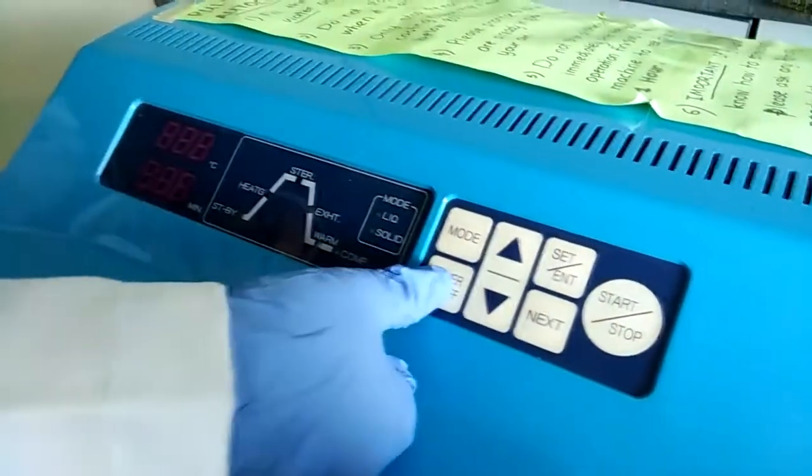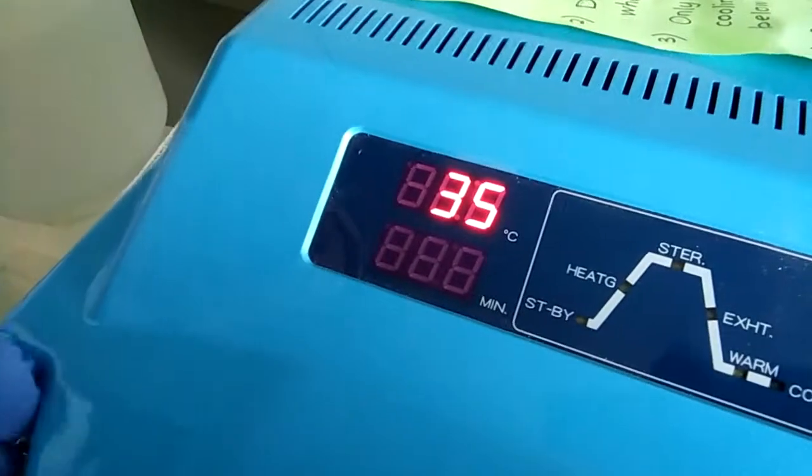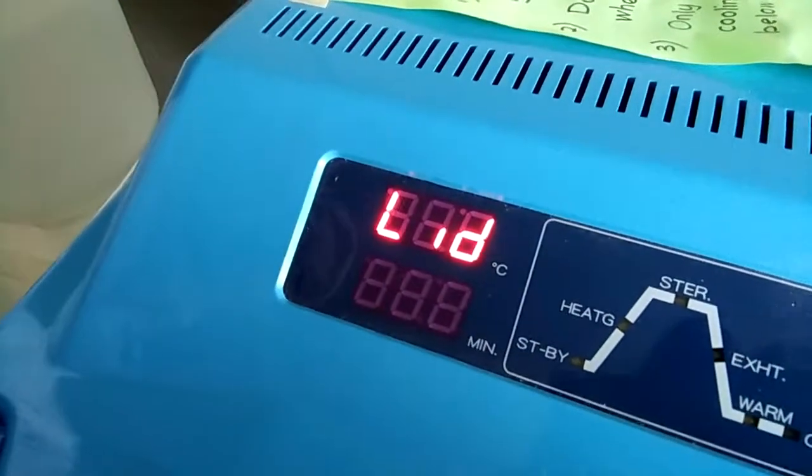After you turn on the autoclave machine, make sure to choose the correct cycle, set the appropriate time and temperature for its transition and drying.